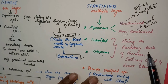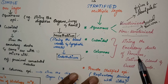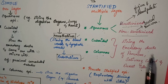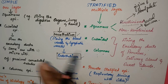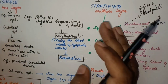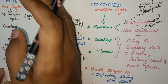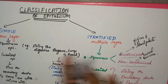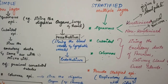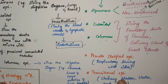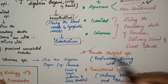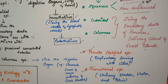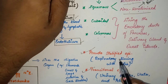Stratified cuboidal and stratified columnar epithelium can be seen lining the excretory ducts of the pancreas, salivary glands, and sweat glands. Apart from simple and stratified, you also have specialized types of epithelium: pseudostratified epithelium and transitional epithelium.